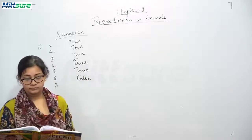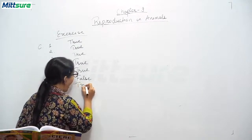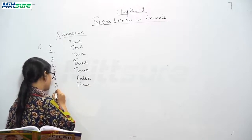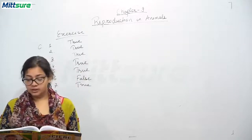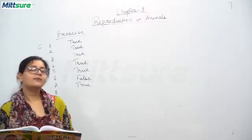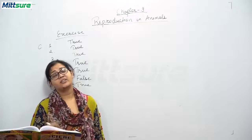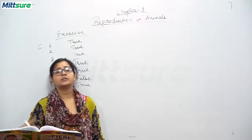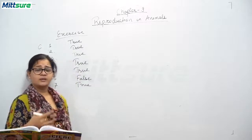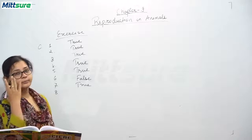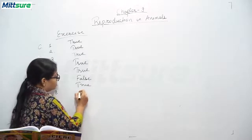Seventh: the uterus is also called the womb. It is also correct — the uterus of the female is also called the womb. Eighth: the larva is formed in the life cycle of a silkworm. A larva is indeed formed. The silkworm lays eggs, which convert into larvae, then into a worm, then a cocoon is formed, then a pupa, and then the silkworm is again produced. So yes, it is also true.